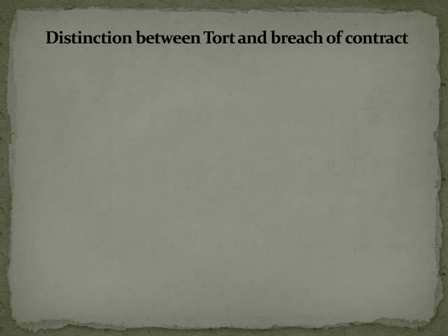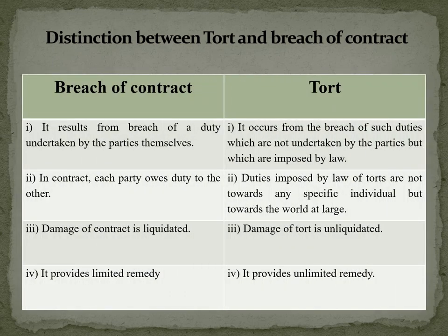Distinction between tort and breach of contract: breach of contract results from breach of a duty undertaken by the parties themselves, whereas tort occurs from the breach of duties which are not undertaken by the parties but are imposed by law. In contract, each party owes duty to the other, but duties imposed by the law of torts are not towards any specific individual but towards the world at large. In breach of contract, damages are liquidated, meaning predefined, whereas in torts, damages are unliquidated — not predefined but determined as per law. Breach of contract provides limited remedy, whereas torts provide unlimited remedy.